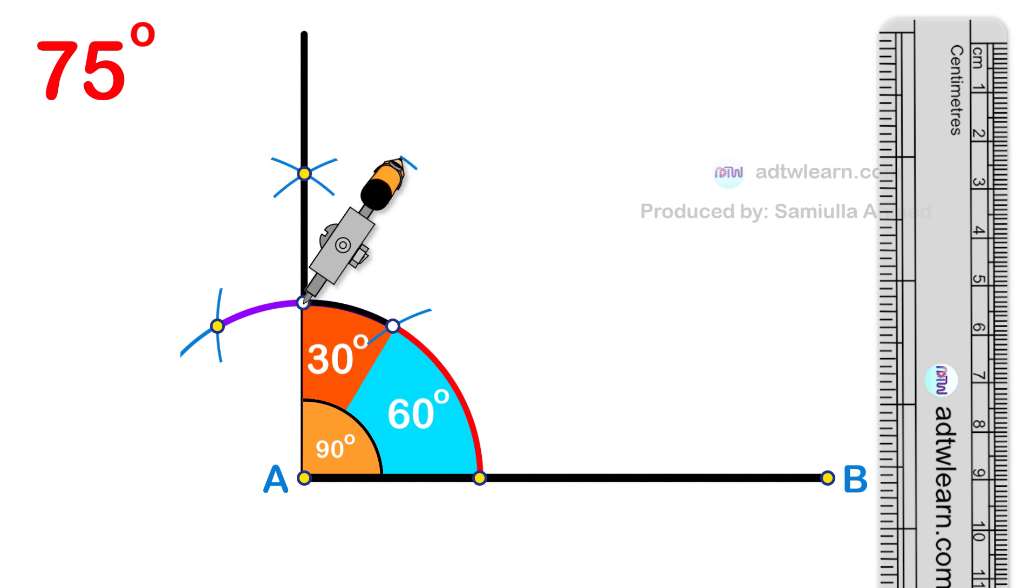After this, draw a line passing through this point from endpoint A of the line. Therefore we got the required 75 degree angle using a compass.